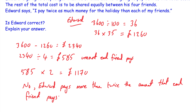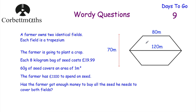Let's look at our next question. A farmer owns two identical fields, each field is a trapezium. The farmer's going to plant a crop. Each 8kg bag of seed costs £19.99. 60g of seed covers an area of 1m². And the farmer has £1,100 to spend on seed. Has the farmer got enough money to buy all the seed he needs to cover both fields? I chose this question on purpose because it involves area — wordy questions can also involve area and volume. It's a calculator question — press pause and try it now.